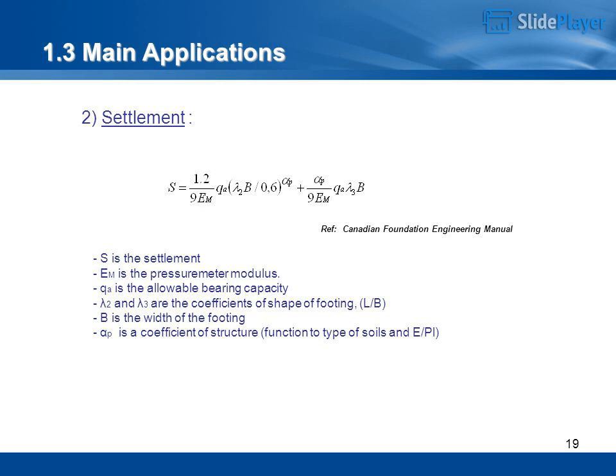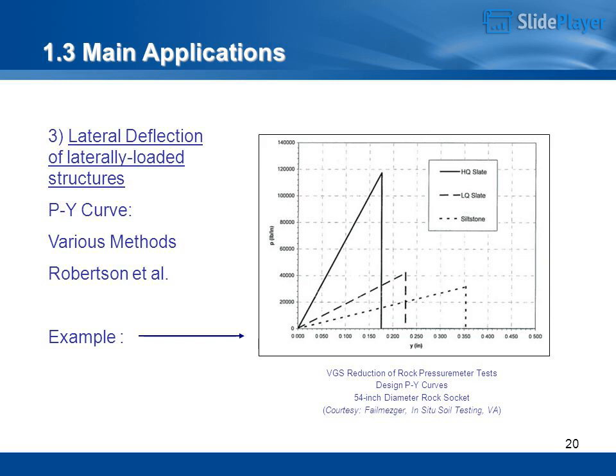Settlement: S is the settlement (reference: Canadian Foundation Engineering Manual). M is the pressuremeter modulus. QA is the allowable bearing capacity. Lambda-2 and Lambda-3 are the coefficients of shape of footing LB. B is the width of the footing. Alpha-P is a coefficient of structure, function of type of soils and E/PL.